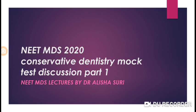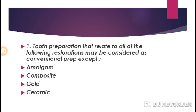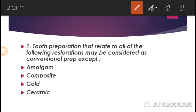Question number one: the tooth preparation that relates to all of the following restorations may be considered as conventional preparation, except for which one? We need to separate out the preparation which is not the conventional form. Option one is amalgam, number two is composite, number three is gold, and number four is ceramic.